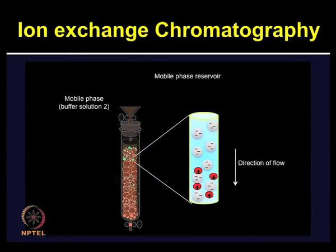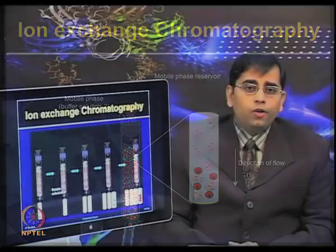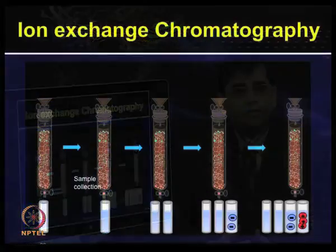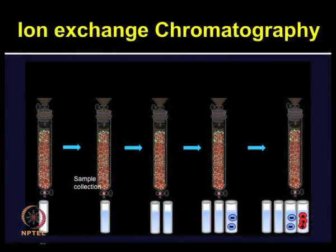The buffer solution is changed so that the net pH of the protein of interest is modified and it no longer binds to the ion exchange resin. Therefore, the bound protein can be eluted out. Negatively charged proteins which elute first will be present in the initial fractions, while positively charged proteins that bound to the column will be eluted in the latter fractions, or vice versa.